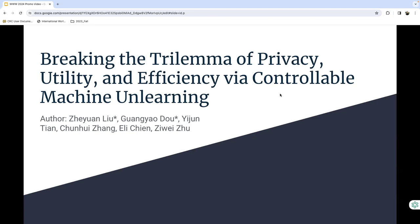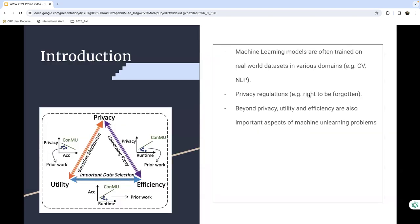So here we present our project. Machine learning models trained on real-world data must comply with privacy laws like the GDPR and the California Consumer Privacy Act, which include the right to be forgotten. Retraining models from scratch to remove specific user data is computational and costly, making machine unlearning crucial.